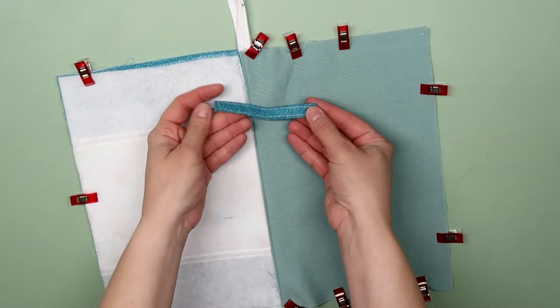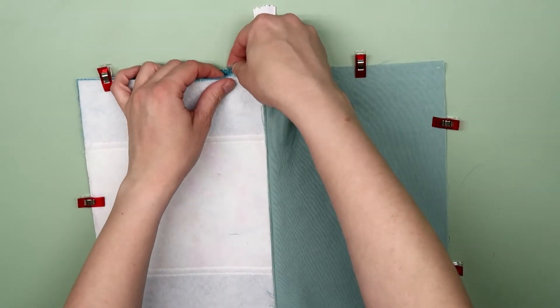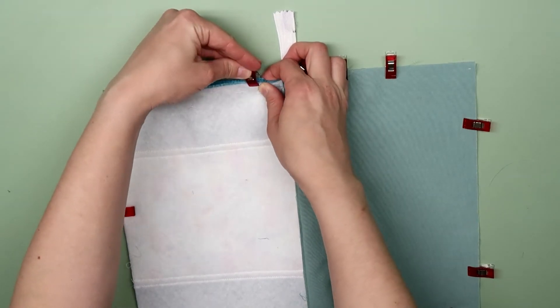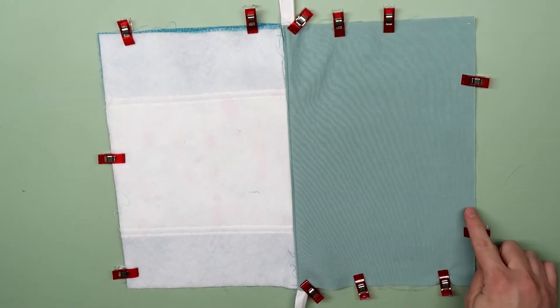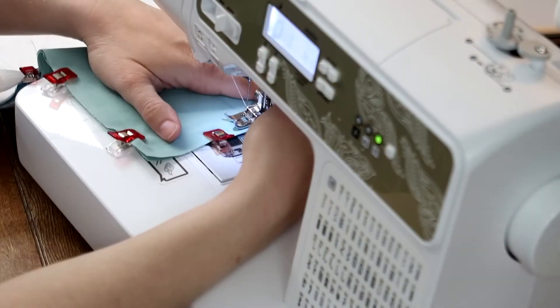Now take either the full strap or the 4 inch section and put that about an inch down from the zipper between the right sides of the outer fabric. Sew all around the edges using a quarter inch seam allowance. Make sure you leave an opening to flip it right side out later.